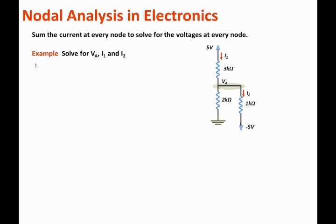Here is method one. In method one, we assume that the current through the three kilo ohm resistor is going into VA. This current is equal to (5 - VA)/3K. And we assume that the other two currents are leaving the node. Since the current through the one kilo ohm resistor is leaving the node, then that is equal to (VA - (-5))/1K. And the current that is leaving VA through the two kilo ohm resistor is basically (VA - 0)/2K.